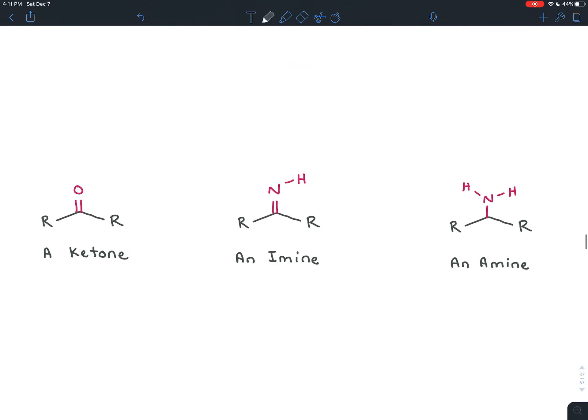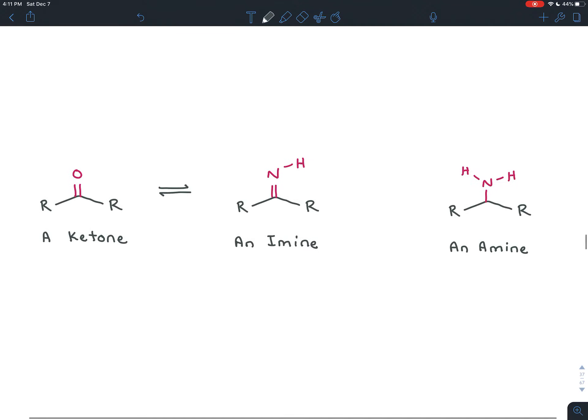Now we've seen this before. We've drawn the mechanism for this before in the aldehyde and ketone chapter. You'll remember that all the steps in that mechanism, which was on a previous test, all the steps were reversible. And so even when you form this imine, there's still some ketone left. These exist at equilibrium.